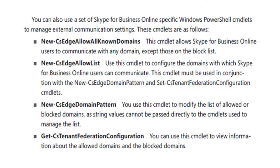You can also use a set of Skype for Business Online-specific Windows PowerShell cmdlets to manage external communication settings. The first cmdlet is New-CS Edge Allow All Known Domains. This cmdlet allows Skype for Business Online users to communicate with any domain except those on the block list.